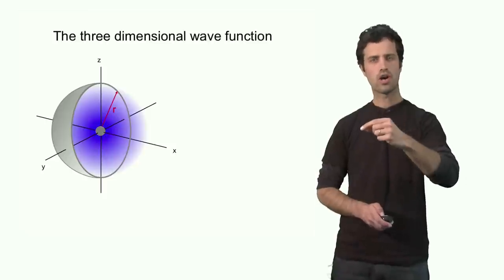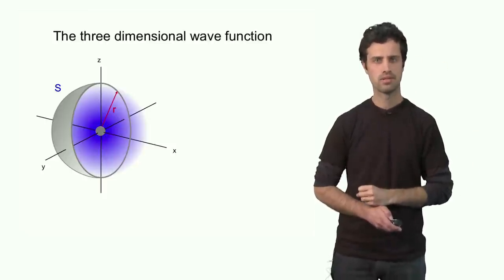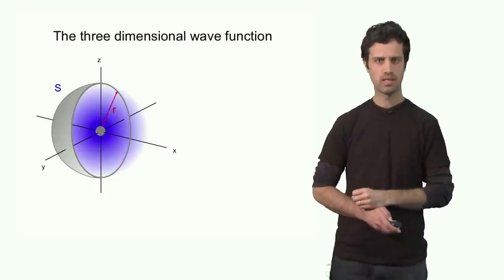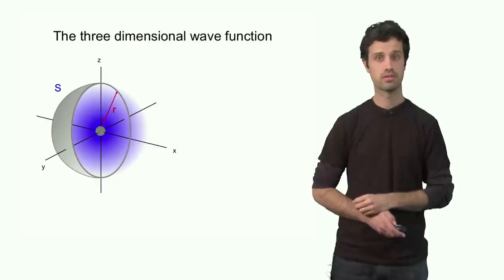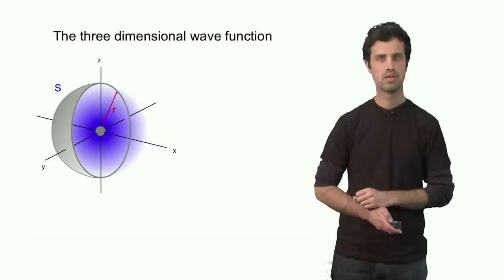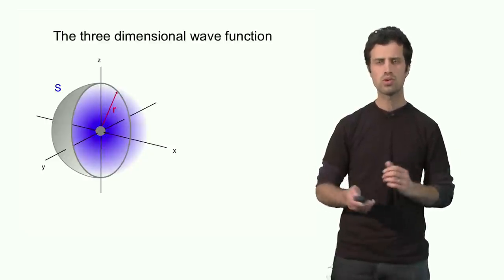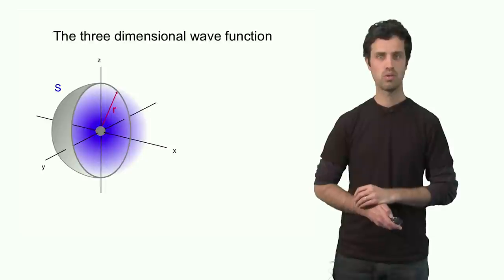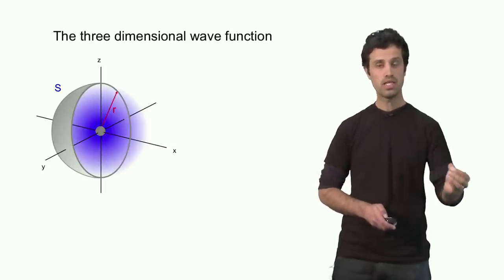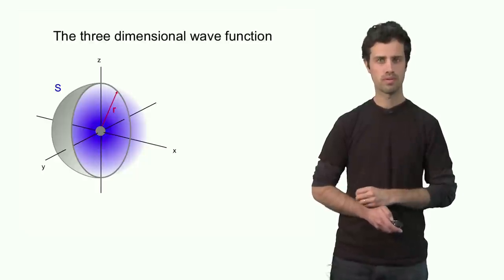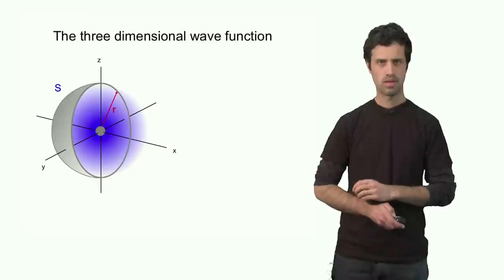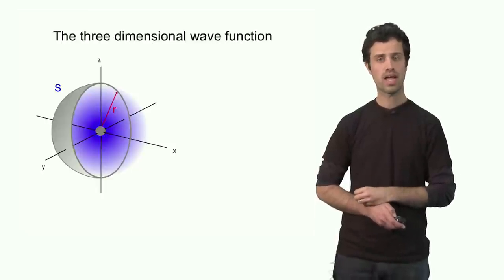For each distance r, there is actually a spherical surface, S. And we can ask ourselves the question, what is the property of the electron function on this surface S? The surface S is defined by two coordinates. And it turns out that in these two coordinates, the electron also has wave behavior. This means that also in these coordinates, we need a quantum number to label the solution of the wave function. That means we need two more quantum numbers in addition to the quantum number n.